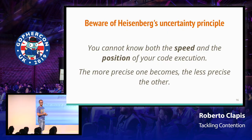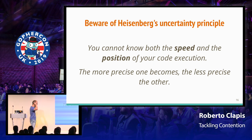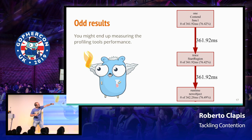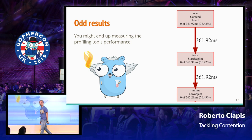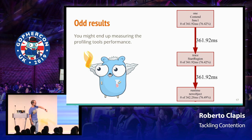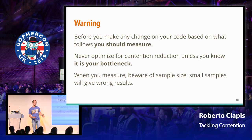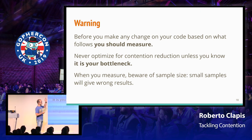That said, try not to measure too much. The Heisenberg uncertainty principle is still valid in Go. If you add too many regions and PPROF too much, you end up measuring the measuring tools. I actually tried to make the previous screenshots precise enough because I knew the real value, and at the end of the day I realized I was just benchmarking the trace start region function. So just do not overdo it. That said, you should always measure. You should know your bottlenecks and not take any action from the rest of this talk unless you know contention is actually a problem.